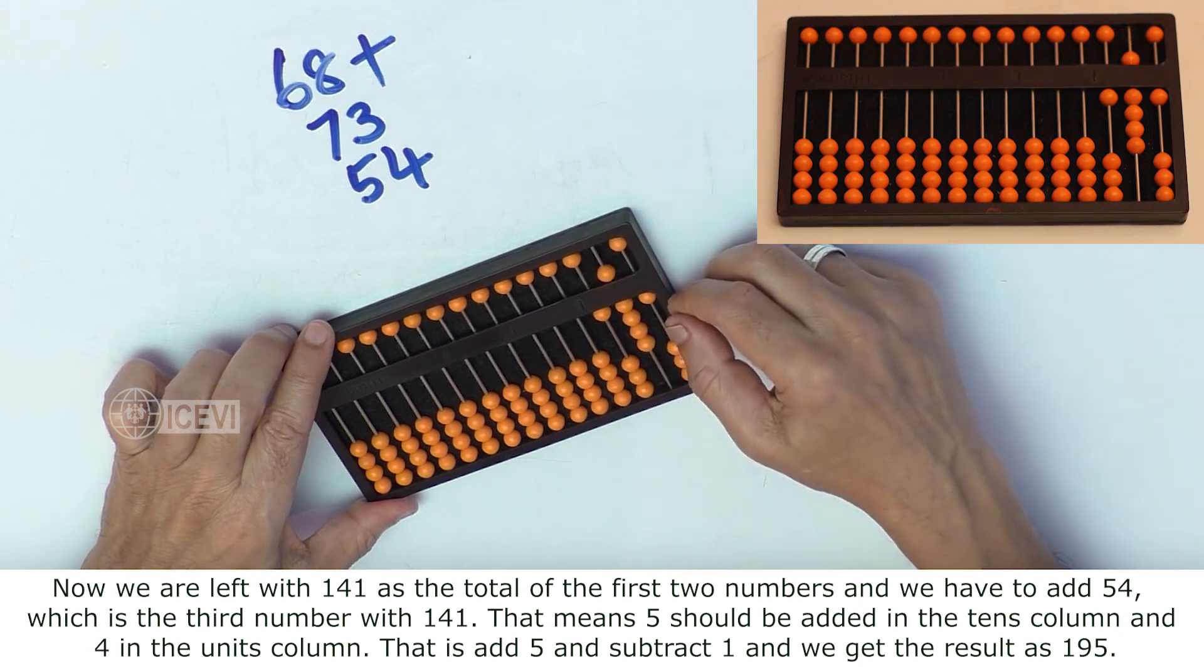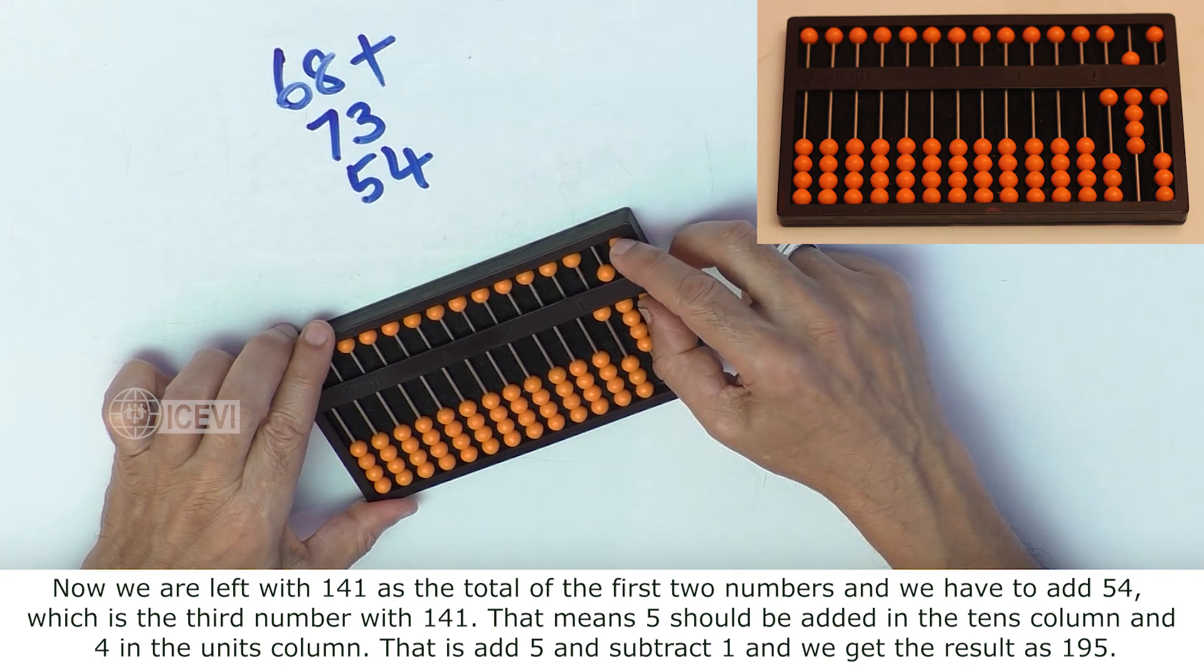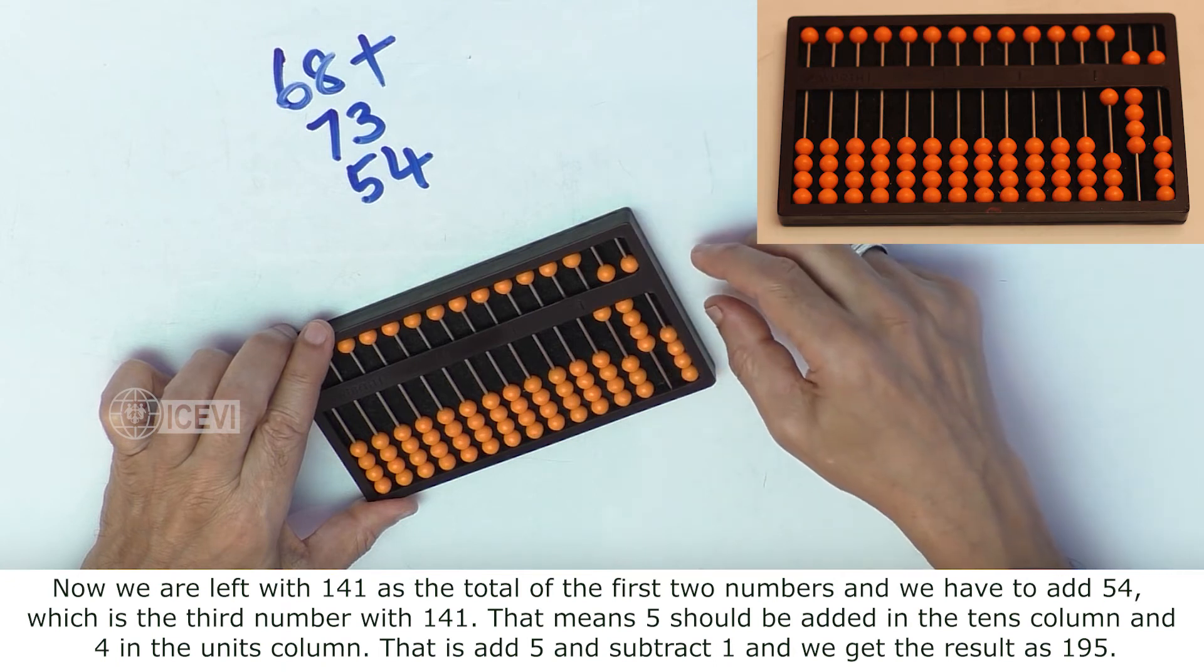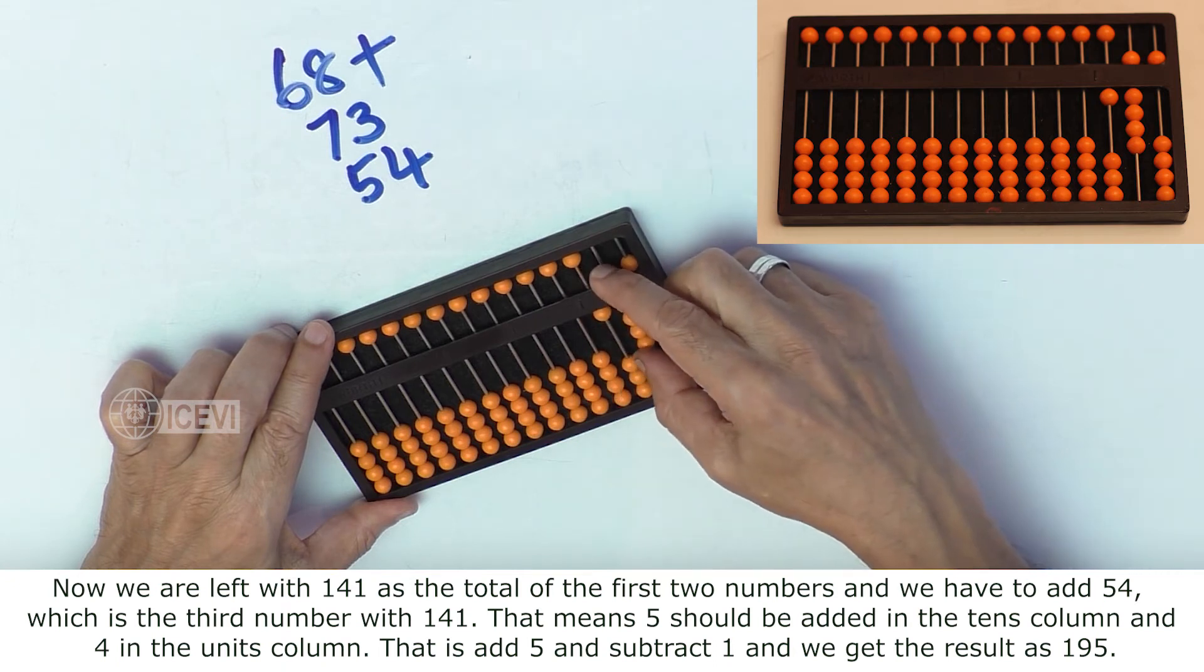That is, add 5 in the tens column. Now we have to add 4 in the units column, which is not possible. That is, add 5 in the upper Abacus and clear 1 bead in the lower Abacus, and we get the result as 195.